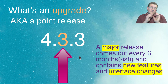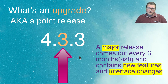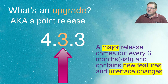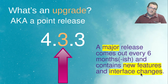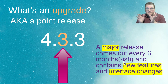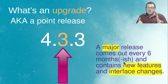An upgrade, on the other hand, is when you're going from, say, Moodle 4.2 to 4.3, or Moodle 4.3 to 4.4. Moodle 4.6 might not exist — more on that later. An upgrade is when you're going a major release. The major release number comes out about every six months, and this is when you've got new features, interface changes, and PHP and SQL version requirements might change as well. You have to check your environment to make sure it's okay for the next major release. That's what I would call an upgrade — you're upgrading the entire system, adding new features and interface changes.